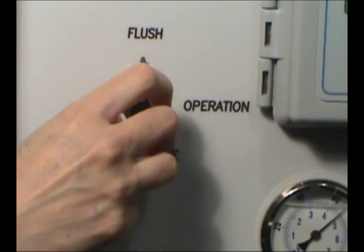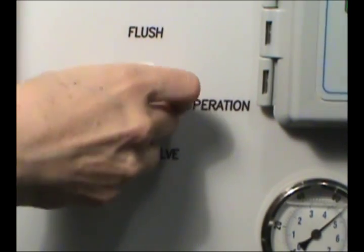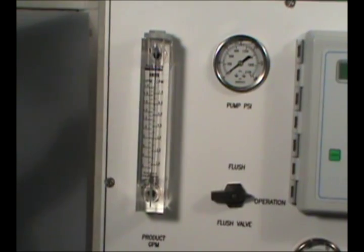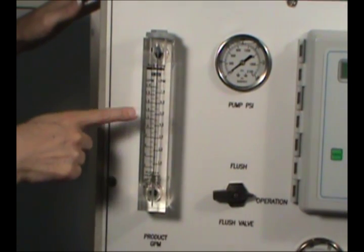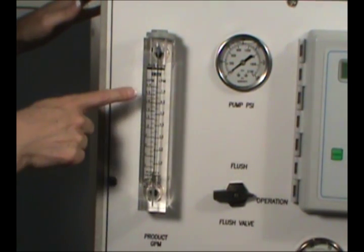After the flushing is complete, turn the flush valve to the operation position. The conductivity level should drop and the flow meter for product water should increase.